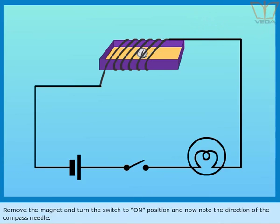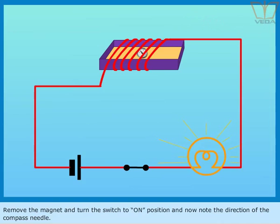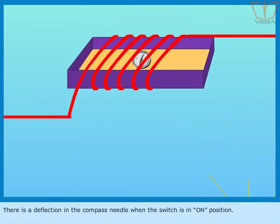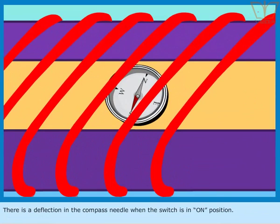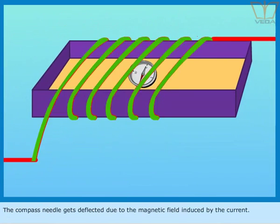Remove the magnet and turn the switch to on position. And now note the direction of the compass needle. There is a deflection in the compass needle when the switch is in on position. The compass needle gets deflected due to the magnetic field induced by the current.